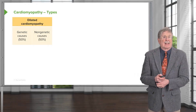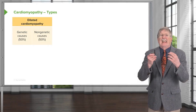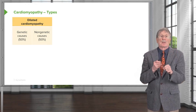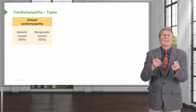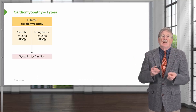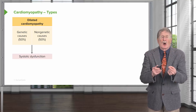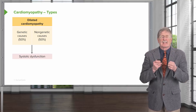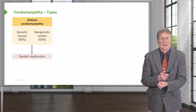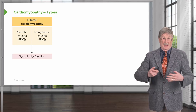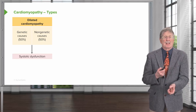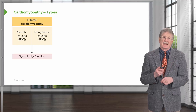Starting with dilated cardiomyopathy: causes are split roughly 50-50 between genetic and non-genetic, though we're finding more genetic causes over time. These dilated cardiomyopathies cause systolic dysfunction — they don't squeeze very well. They fill pretty well since they're floppy, but they just don't squeeze the blood out, so ejection fractions will be markedly diminished.